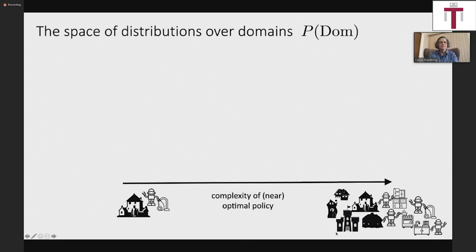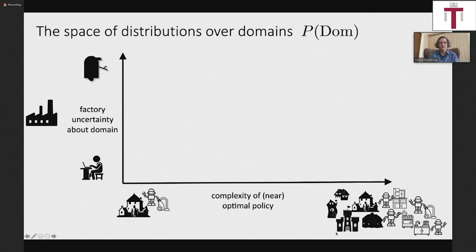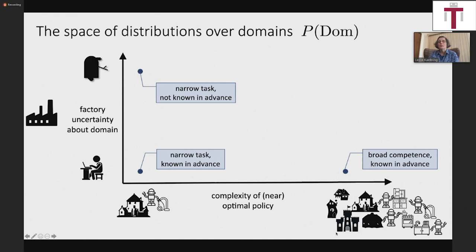One way to get a handle on this problem is to think about the space of distributions over domains. These distributions might vary in character, and depending on that distribution, we might have very different kinds of solutions. One axis of variability is how complicated the problem is — how complicated the policy we're going to need. Another dimension is how much uncertainty we, the factory, have about the problem the robot is going to have to solve. We might have a narrow task we know in advance, or a complicated set of problems we don't know in advance.